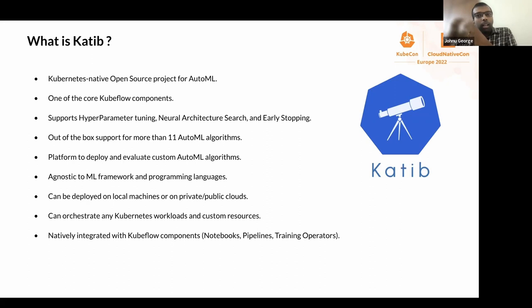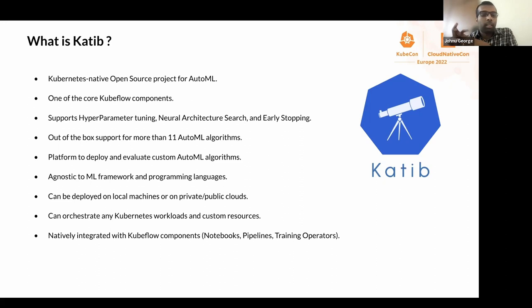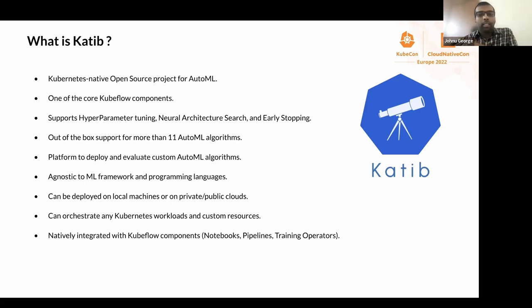Coming to Katib — that's the main focus of this talk. It's a Kubernetes-native open source project for general AutoML needs and one of the core Kubeflow components. It can be deployed independent from the main Kubeflow installation or tied with the Kubeflow domain deployment. From all the AutoML domains discussed, it supports hyperparameter tuning and neural architecture search with early stopping. Out of the box, it supports almost all popular AutoML algorithms — for example, Bayesian, Hyperband, TPE, CMA, etc. The platform is very extensible: users can deploy a custom AutoML algorithm during runtime without even restarting the deployment.